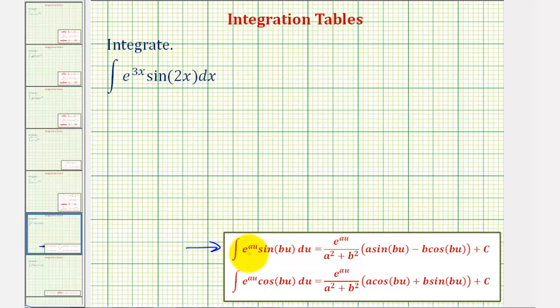Let's begin by identifying the key values of a and b. Notice a would be equal to 3 since we have e raised to the power of 3x, and b is equal to 2 since we have sine 2x.